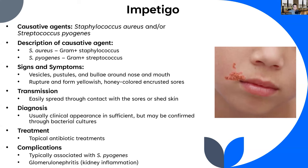Bacterial cultures can determine the exact causative agent, whether Staph aureus or Strep pyogenes, but usually we don't need to do that because the same antibiotics will probably work for either - it's usually just a topical cream applied right to the area. Clinical appearance is usually sufficient for diagnosis. Complications are typically only seen when the disease arises from a Streptococcal infection; Streptococcus pyogenes can lead to glomerulonephritis - inflammation of the kidney. We don't see too many complications with Staph aureus-based impetigo.